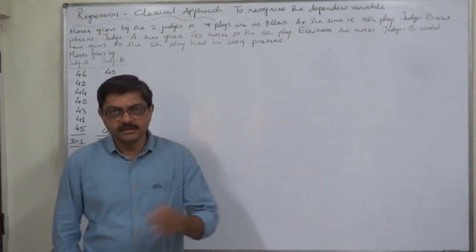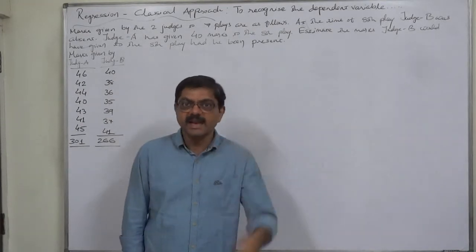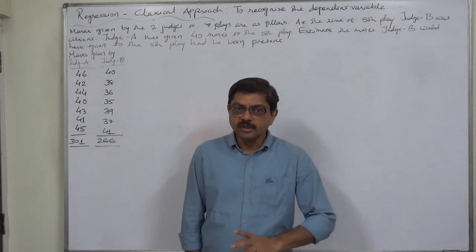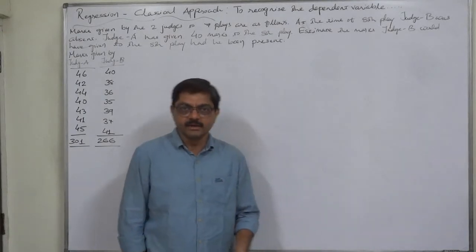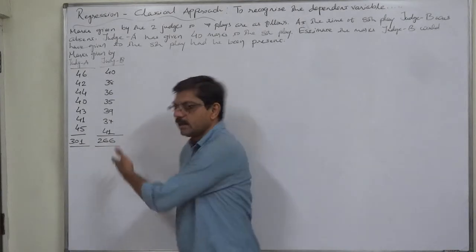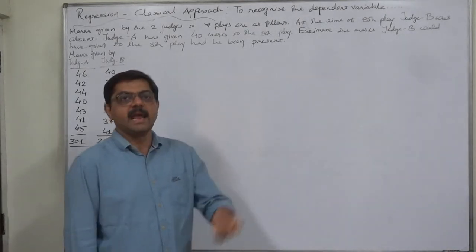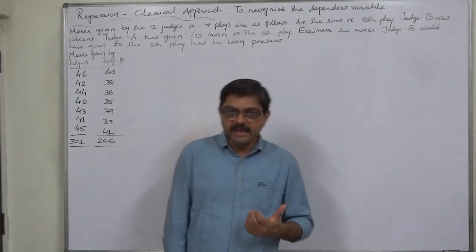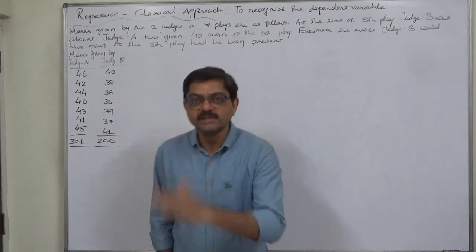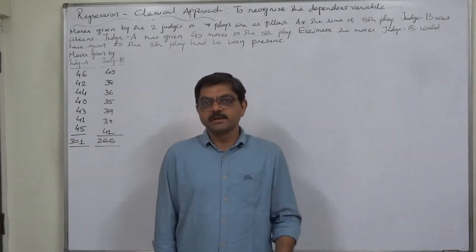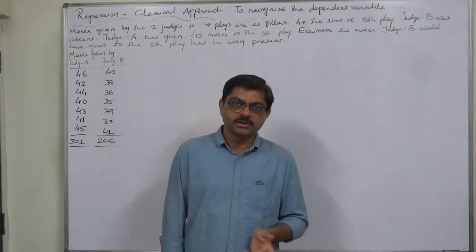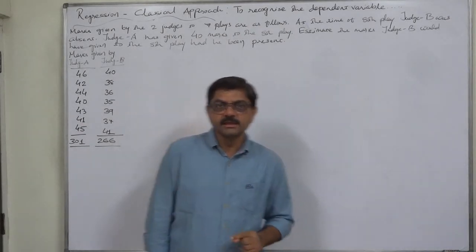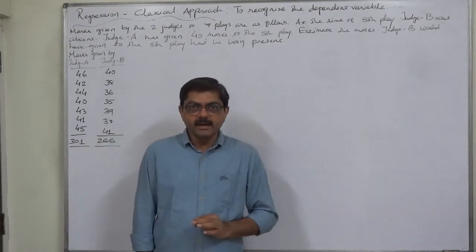We don't know which is variable x and which is variable y — it is upon us to assign them. The question is how to recognize, on the basis of the content of the question, which should be treated as the dependent variable and which as the independent variable. The benefit here is that this kind of problem is always one-sided: we need to calculate only one coefficient of regression, find only one line of regression, and find the estimated value of only one dependent variable. The important thing is to correctly identify the dependent and independent variable.